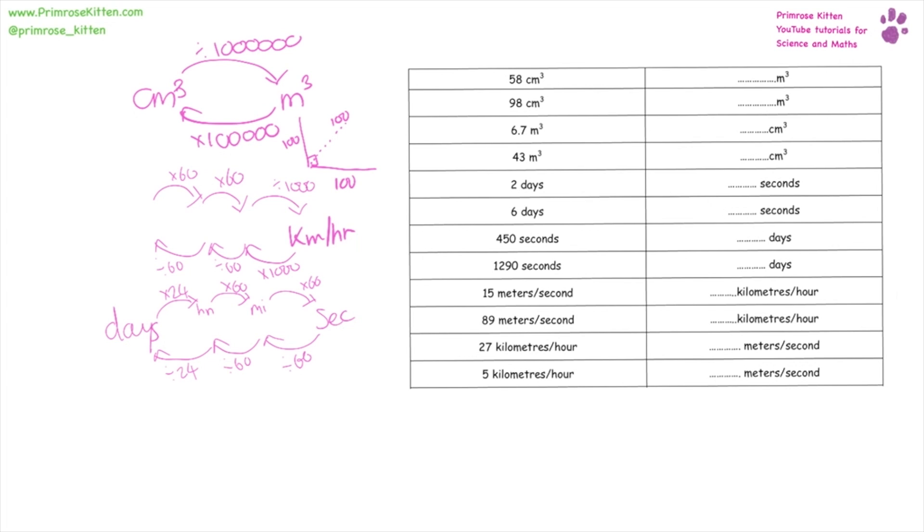So this gives us 0.0000058, 0.0000098. 2 days is 172,800 seconds, 6 days is 518,400 seconds.